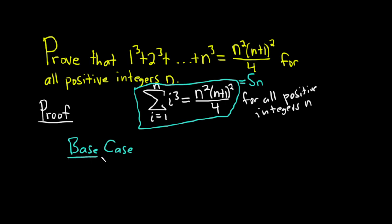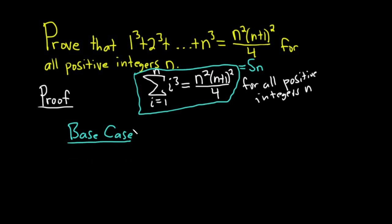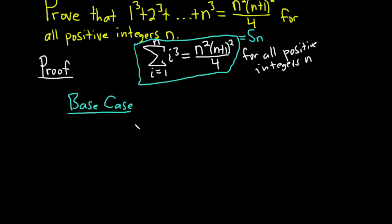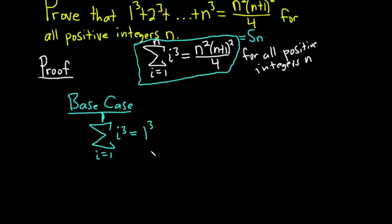Base case. In the base case, you show your statement is true for the smallest positive integer in question. In this case, we have to show our statement is true when n is equal to 1. So we plug in 1 for n: the sum as i runs from 1 to 1 of i cubed, which is just 1 cubed. That's the left-hand side — LHS is equal to 1.